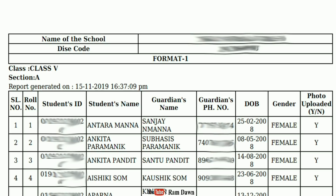Now let's select the school name and Dice Code. Select Class 5 Section, then select the report. Select the date for which the report is generated. We have to print out the 5A section.